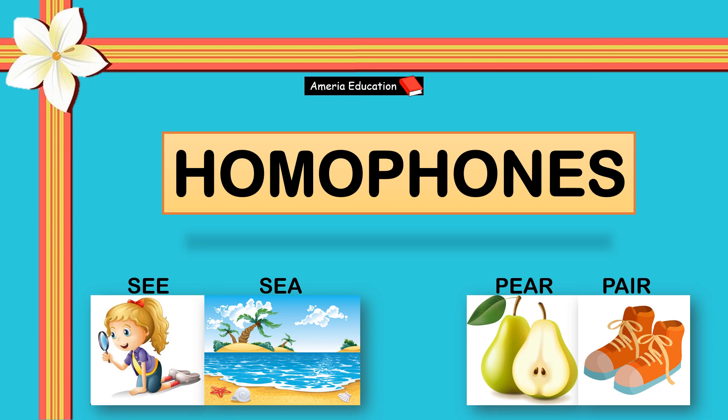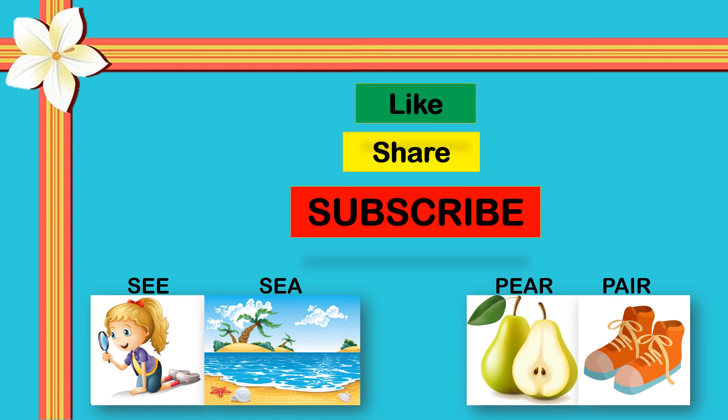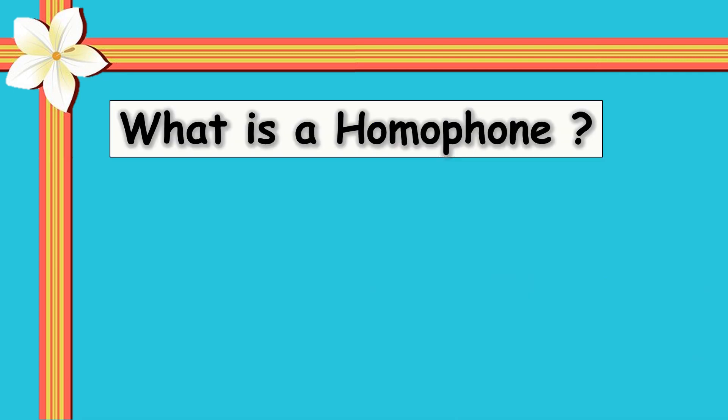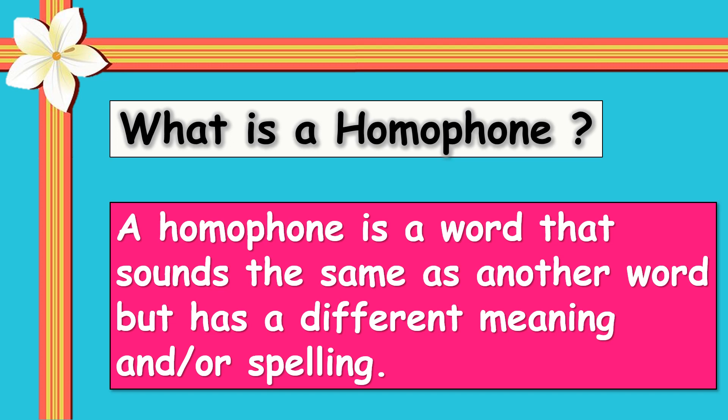Hello friends, today we will learn about homophones. Firstly, we will learn what is a homophone. A homophone is a word that sounds the same as another word but has a different meaning and spelling. It means homophones are words which have different meaning and spelling but have the same pronunciation.